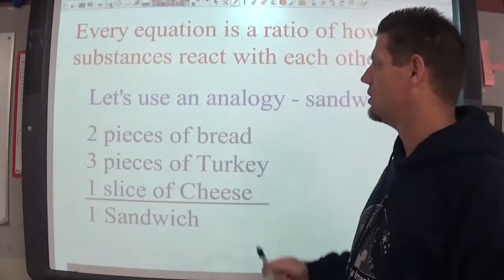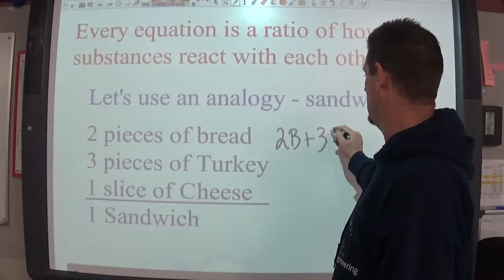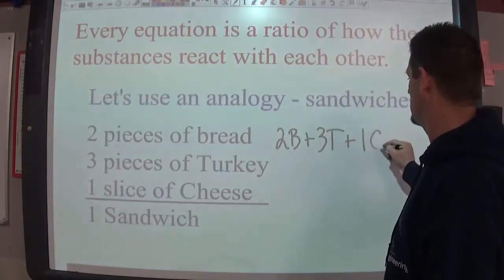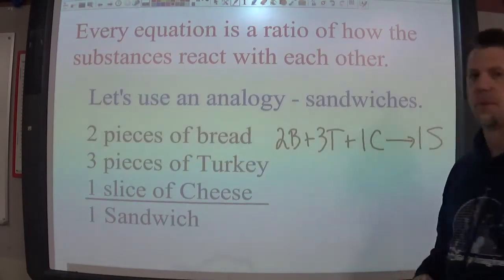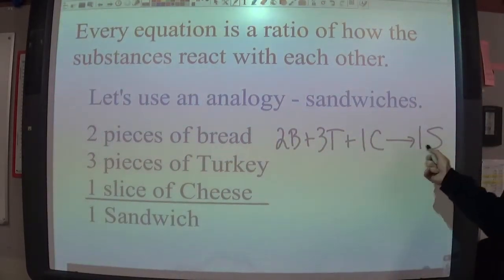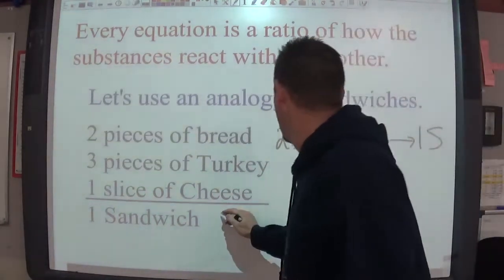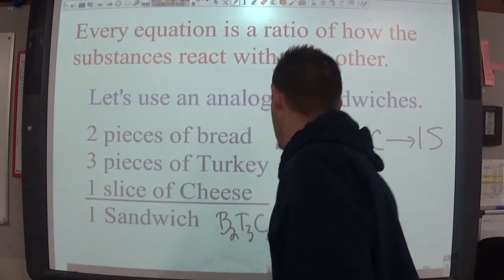So again, I have two B's plus three T's plus one C is going to form one S. This is our balanced chemically equation because an S, we could break the sandwich apart into being B, sorry, B2, T3, C.